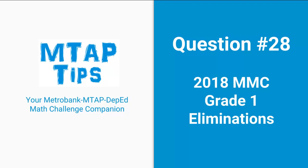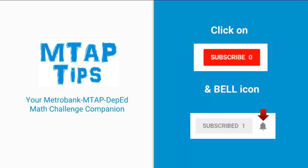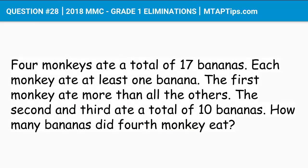Question number 28 for 2018 MMC Grade 1 Eliminations. For more MTAP tips, don't forget to subscribe and click on the bell icon so you'll get notifications when we upload new videos. Four monkeys ate a total of 17 bananas. Each monkey ate at least one banana. The first monkey ate more than all the others. The second and third ate a total of 10 bananas. How many bananas did the fourth monkey eat?